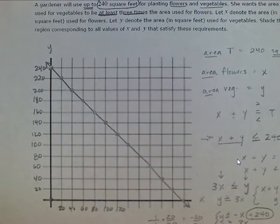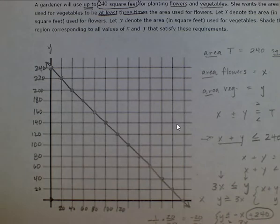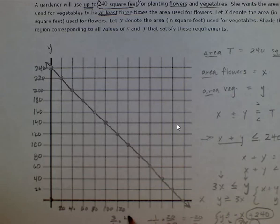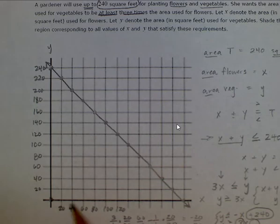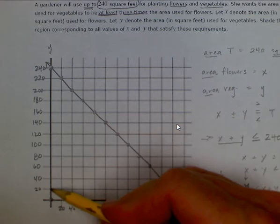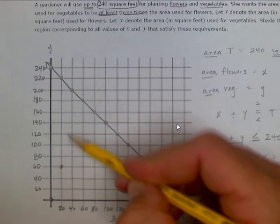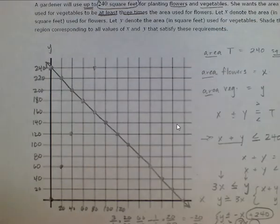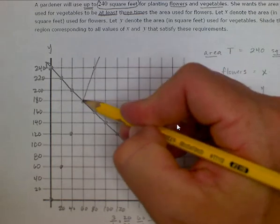Now for the second part of the system: y is greater than or equal to 3x. It's missing a y-intercept, so we start at the origin. The slope is positive 3 over 1, and multiplying by 20 over 20 gives 60 over 20. So we move up 60 and right 20 per grid step — the same pattern as up 3 over 1. Because the inequality includes equal to, we also draw a solid line.